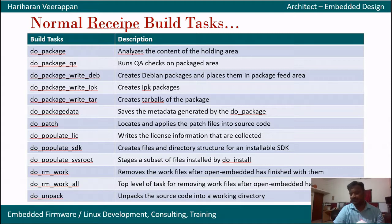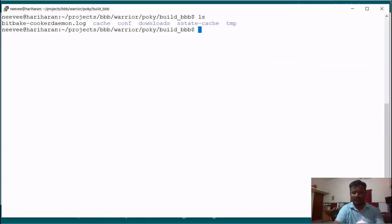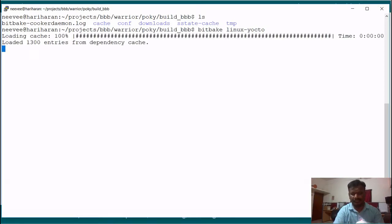We have functions to remove work files: do_rm_work and do_rm_work_all, which basically remove the work files accordingly. If we are downloading a tar file from Git or any repository, it has to be unpacked. The do_unpack task does the unpacking of the source code into the working directory.